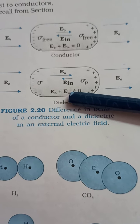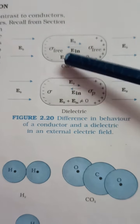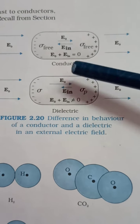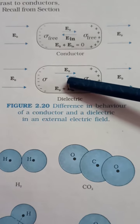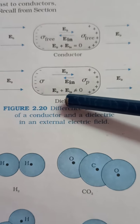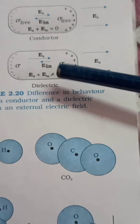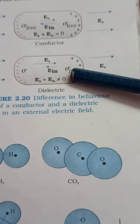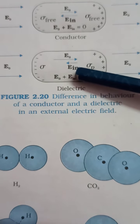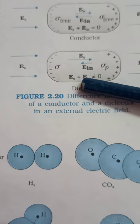In the case of a dielectric, the external field stretches or reorients the molecules of the dielectric. In a conductor, free charges are present which produce an internal field, but in a dielectric, free charges are not there. So because of the external field, a dipole moment is produced, and because of that dipole moment, an internal field is produced on the surface of the dielectric, which opposes the external field.